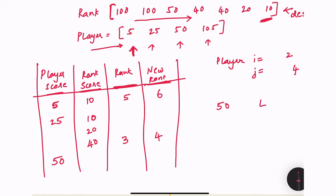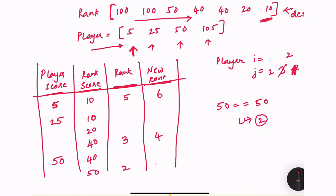The new player score is 50. Comparing with rank score 40 — 50 is greater, so decrement j. The next value is also 40, so decrement again to j=2, giving rank score 50 with corresponding rank 2. Since both scores are equal, the new player shares the rank — rank 2. We append rank 2 to the result and increment i to 3.